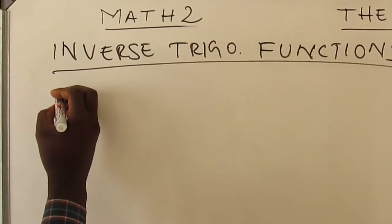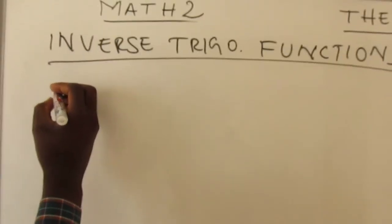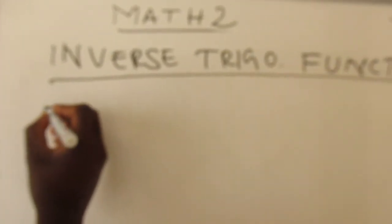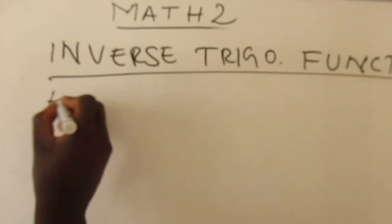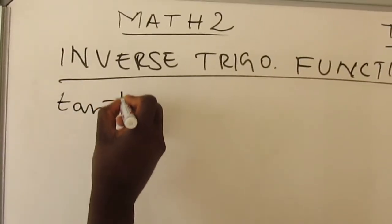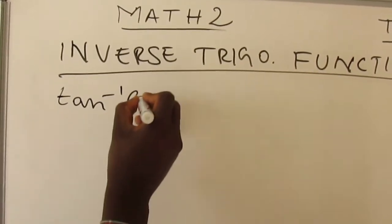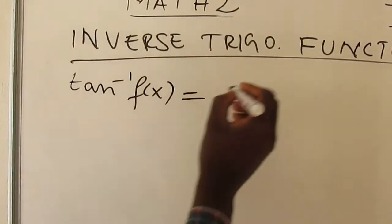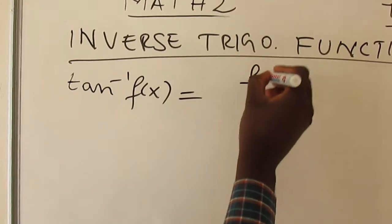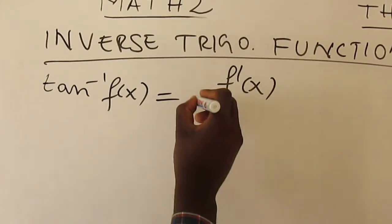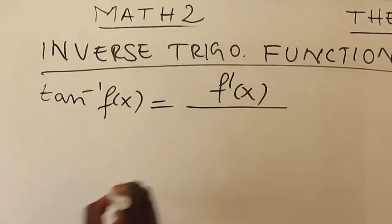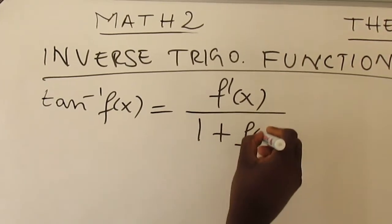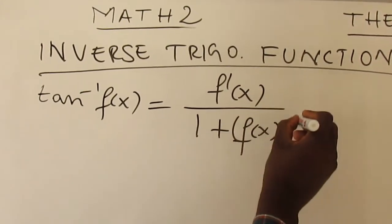Apart from arc cos and arc sine, we also have arc tan of f(x). With arc tan, you derive f(x) then divide over 1 plus f(x) squared.